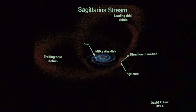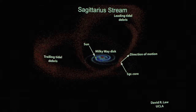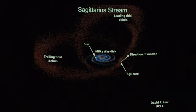The Sagittarius dwarf galaxy is one of the closest galaxies to us — about 70,000 light years away. We've known about the Sagittarius dwarf galaxy core for a while, and people have been running simulations of it trying to understand how it has evolved in its orbit.